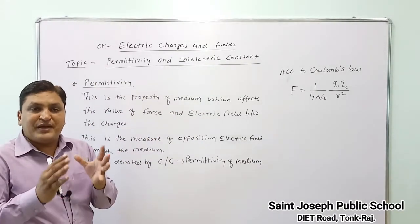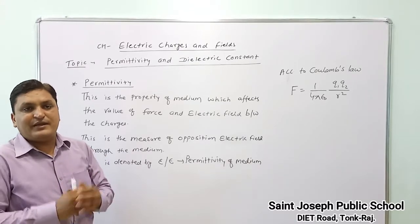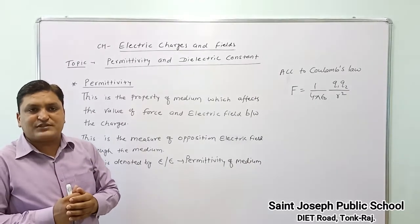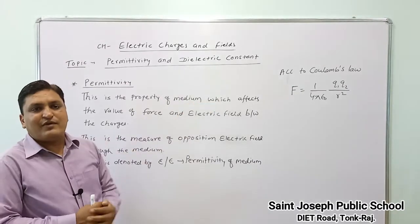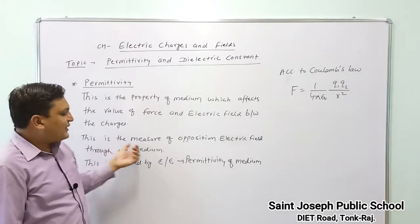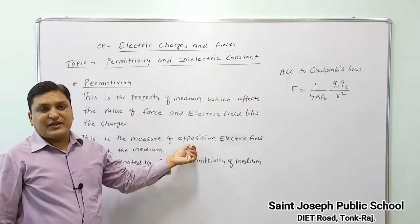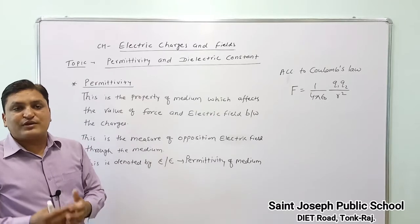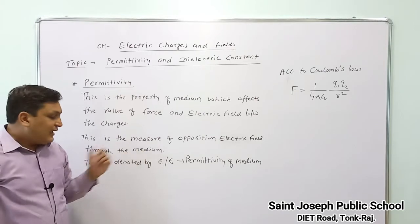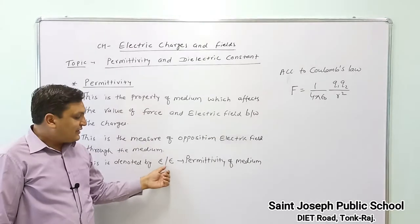Permittivity is actually the measure of opposition of electric field lines passing through the medium. It measures how much the medium opposes the electric field and the Coulombic force — that is, the electrostatic force written as 1 upon 4 pi epsilon naught q1 q2 upon r square. This is denoted by epsilon and is called the permittivity of the medium.